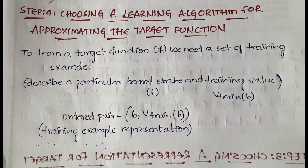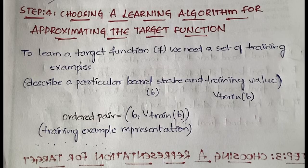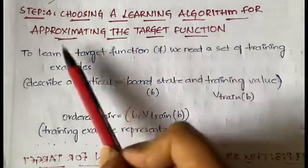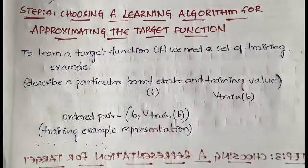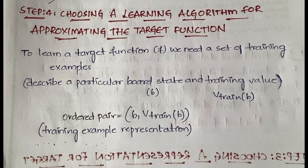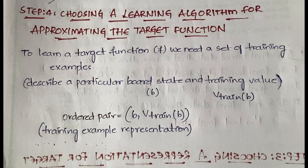Let's start now. In the first, second, and third steps we discussed choosing a training experience, choosing a target function, and choosing a representation for the target function. Here in step four, we are going to choose a learning algorithm for approximating the target function — that algorithm will approximate the target function.